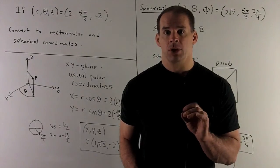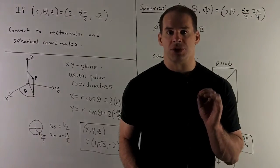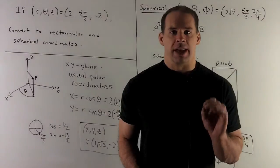First, rectangular. So we want x, y, and z. We get z for free, that's minus 2. So I just need x and y. To get x and y, we use our usual formulas from polar coordinates in the x, y plane.